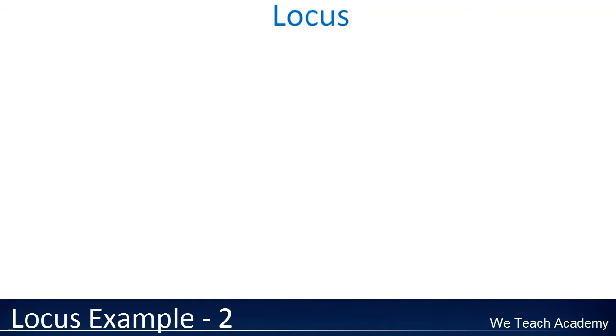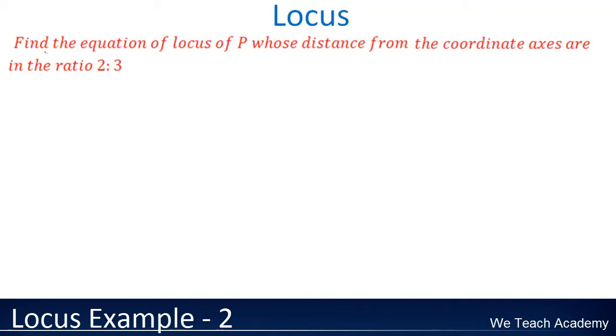Hello guys, welcome back. In this video, we are going to discuss an example relating to locus. We need to find the equation of locus of a point P whose distance from the coordinate axes are in the ratio 2:3. So we are dealing with the coordinate axes, so let us consider a plane.